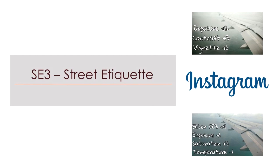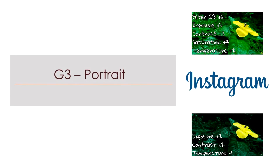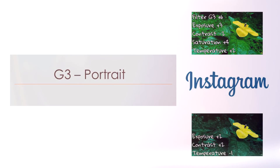If you're moving more towards a black or dark tone, the street etiquette filter called SE3 in VSCO pretty well does the job. It changes the photo into a darker shade, giving an intense feeling to your photo. The last filter is called G3 — it's a portrait filter. This filter gives a sunny warm tone to your photo and is very suitable for outdoor photo shoots.